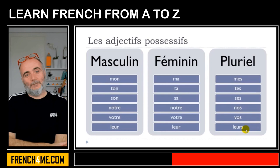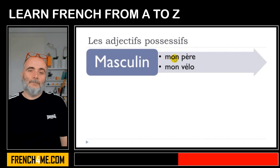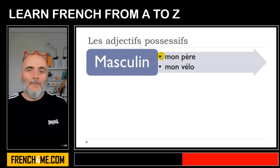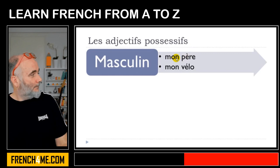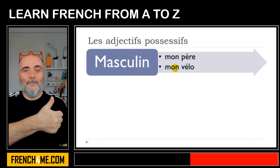Let's see some masculine examples. Mon père means my father. Father is masculine, so you use the masculine form mon. My bicycle is mon vélo, just because vélo is masculine — un vélo, so mon vélo.